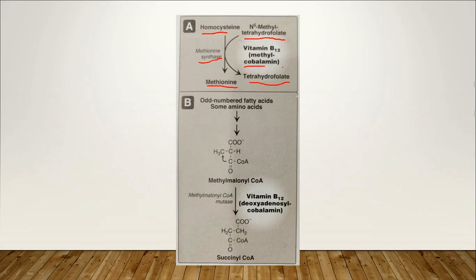Now going to clinical manifestation: in adults, pernicious anemia is there. Vitamin B12 deficiency produces macrocytic anemia in the case of adults. There is also mucosal atrophy of the stomach.